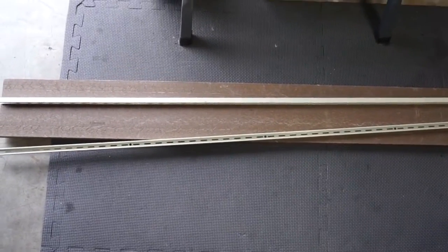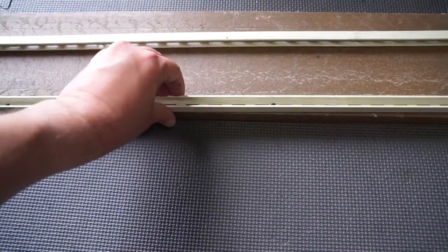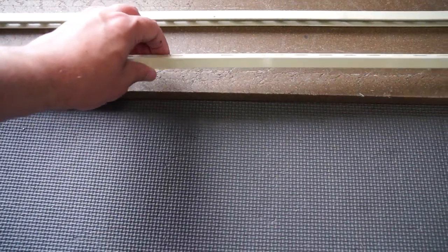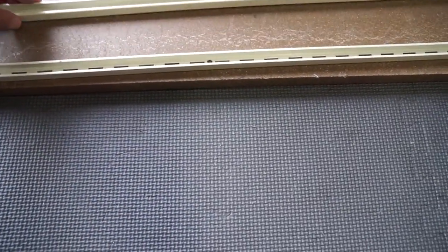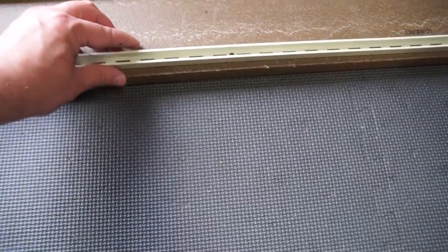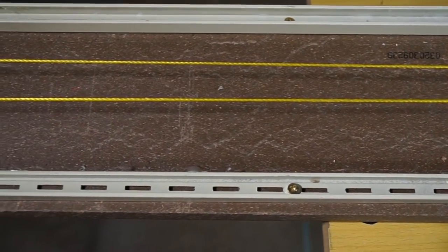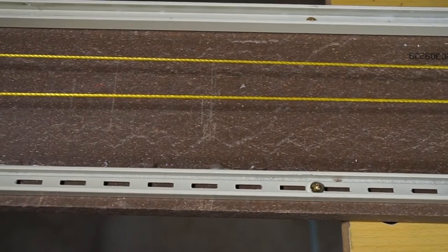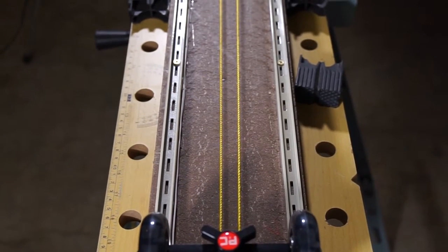You start by building the base of the slider. You can use track composite material like I use here or you can use just a piece of wood that is flat and long enough to sustain the slider. You will also need two aluminum rails that you can purchase in any hardware store. I attached the two aluminum rails to the base using wood screws and made sure that they were perfectly parallel to each other.